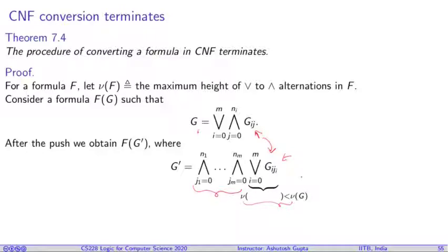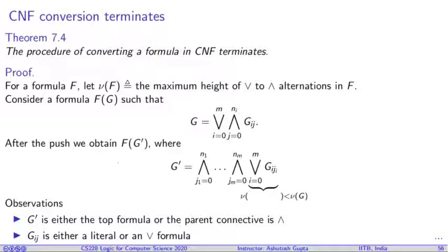Now, if that is the case, we will use this fact to prove our theorem. So a few observations you must make. G prime is either the top formula or the parent of this formula is a conjunction. Remember that we have a sequence of disjunction, conjunction, disjunction, conjunction. So above G must be a conjunction. Another observation is Gij is either a literal or a disjunction formula. So below these guys, so you have a Gij, this guy should be either a disjunction or already you end with some literal.